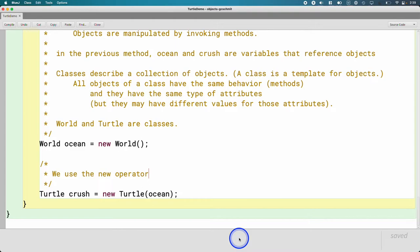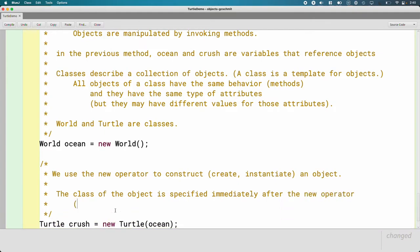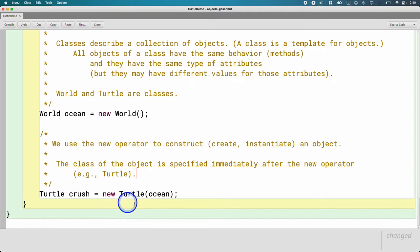So we use the new operator to construct. The word construct is the same as like create or instantiate is a word you'll see. I'm going to use construct because it reinforces some of our key Java concepts. So we use the new operator to construct an object. So we got to have the word new here. The class of the object. Remember classes are like a class is a template for objects. So the class of the object is specified immediately after the new operator. In this case, it was turtle.